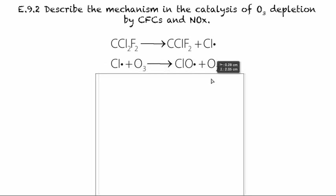This chlorine free radical can react with ozone in the atmosphere and create oxygen, which is slightly more stable than ozone. We've also created another free radical, so this is like a propagation step.